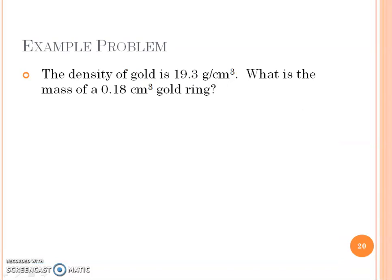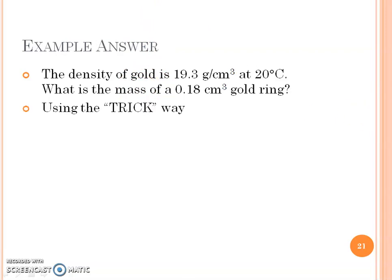Let's look at some example problems. Density of gold is 19.3 grams per cubic centimeter or milliliters. What is the mass of a 0.18 cubic centimeter gold ring? They give us density and volume, so we want to find out the mass. Let's do the trick way first - if I cover up mass, I'm going to use that pie, and it's density times volume. Pause at this point, make sure you have a calculator out, and do the math. You should get 3.47 - don't forget the grams as the unit. At this point, don't worry too much about sig figs. Just go to two decimal places.